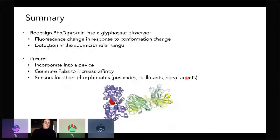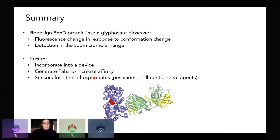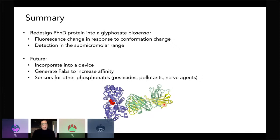We can detect as little as 0.2 micromolar of Roundup, which is well below the drinking water limit in the United States, making our sensor environmentally relevant. In summary, we designed a phosphonate binding protein into a glyphosate biosensor that detects glyphosate in the sub-micromolar range using fluorescence monitoring of conformational change. Future work includes incorporating this into a portable field device and using FABs allosterically to tune the detection range.